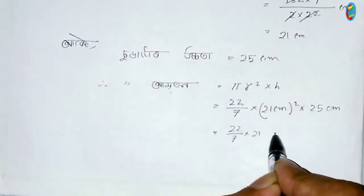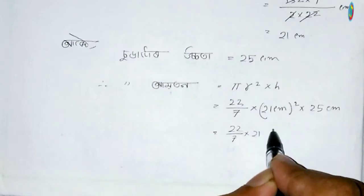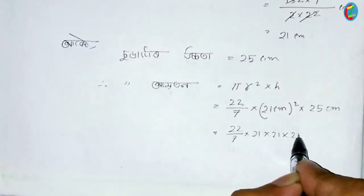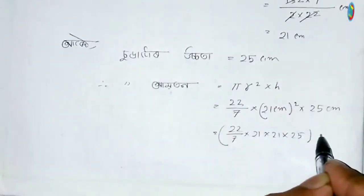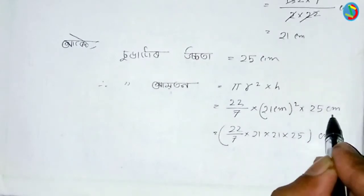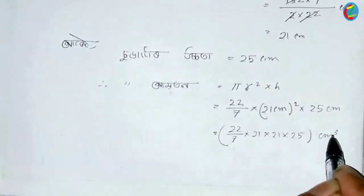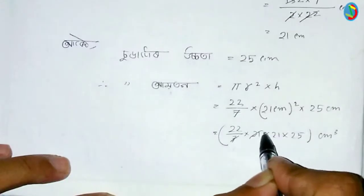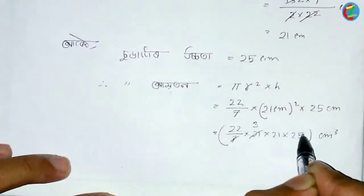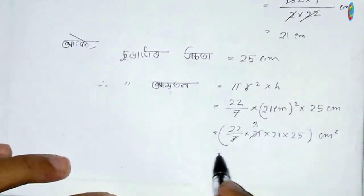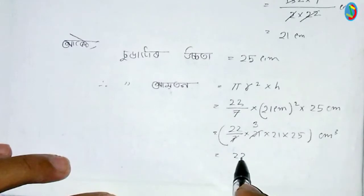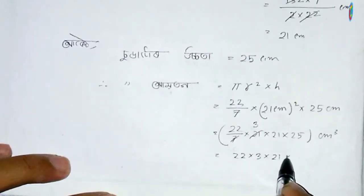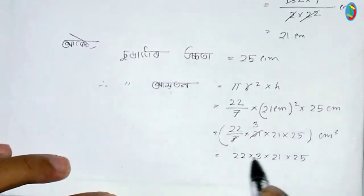Plus square, divided by 21. We have 22 times 21 times 25, divided by 21. Working through: 22 times 3 times 21 times 25.